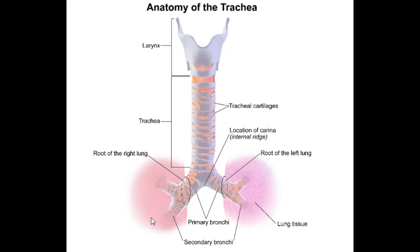The primary bronchi bifurcate into secondary, or lobar, bronchi which supply the different lobes of the lungs. The lobar or secondary bronchi will then bifurcate into segmental or tertiary bronchi. So the hierarchy is: primary, then secondary, then tertiary. The tertiary bronchi supply the bronchopulmonary segments, which are subdivisions of the lung lobes and act as functional units of the lung.